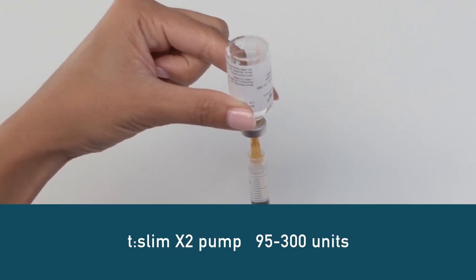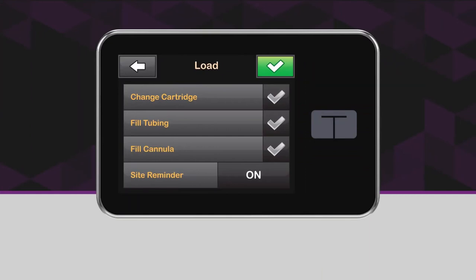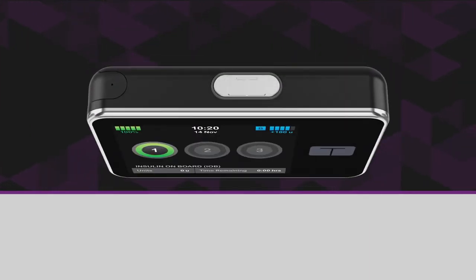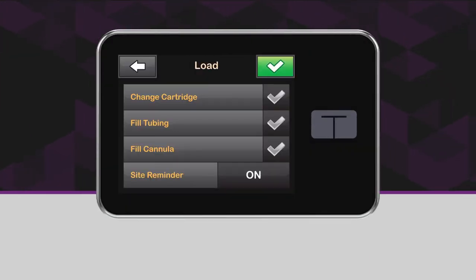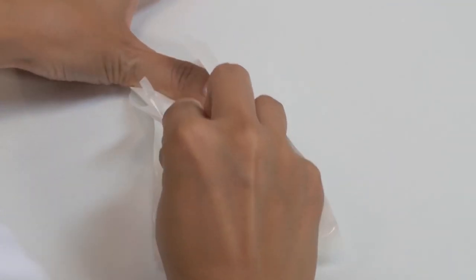Be aware that overfilling can damage your cartridge. If your pump screen times out at any point during the load process, just unlock your pump and it will resume right where you left off. First, examine your cartridge and packaging for any visible damage. If you suspect the cartridge may be damaged, do not use it. Now open the package and remove the cartridge.